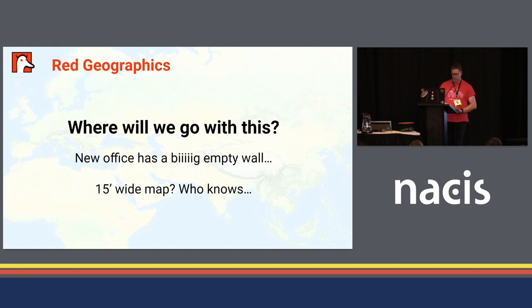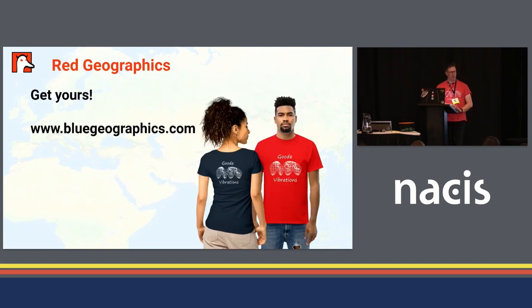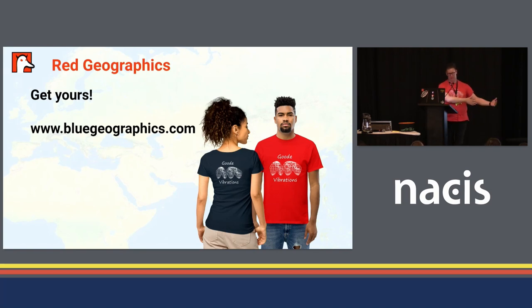So where will we go with this? We recently signed a lease on our new office space, and it has a big empty wall with pretty much the correct dimensions for this map projection. We haven't made up our mind yet, but I'm going to make a strong case for printing it large. You can also get your own copy — not only in the projection trading cards, but we also made T-shirts. Head over to bluegeographics.com, our side business, and order yours. Thank you very much — I hope this was useful, and I'm really happy to be back at NACIS. It's like coming home.